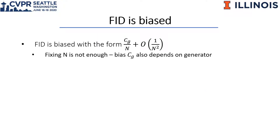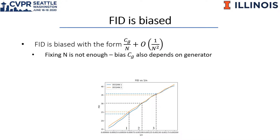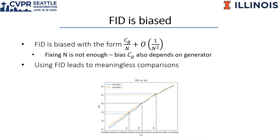We proved that FID has a bias which depends on the generator. For the graph, the y-axis is FID and the x-axis is 1 over n. FID changes as n changes, which means bias exists. The slope depends on the generator.